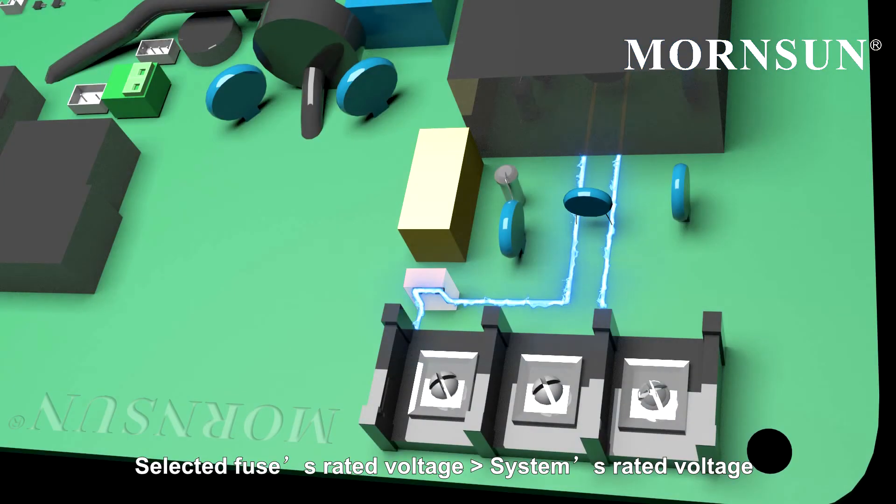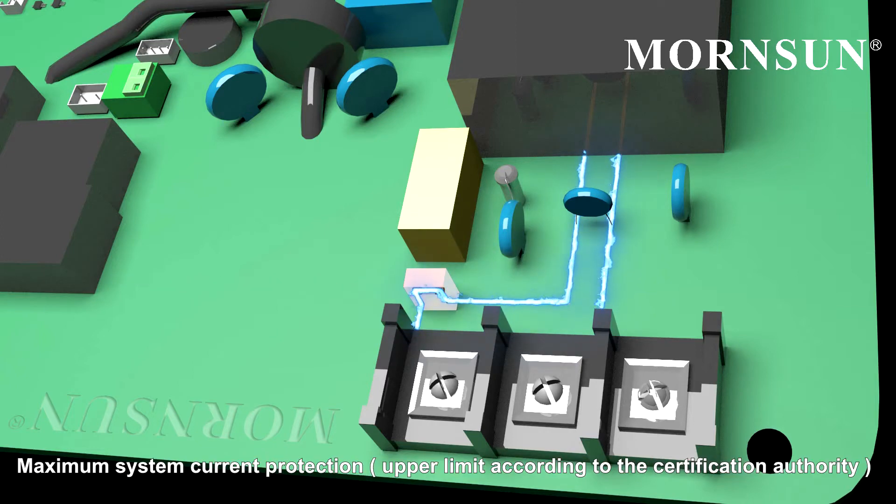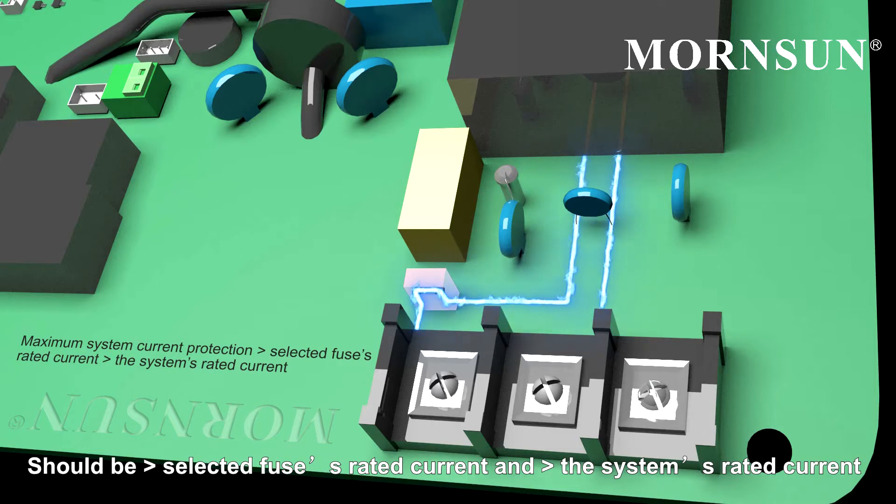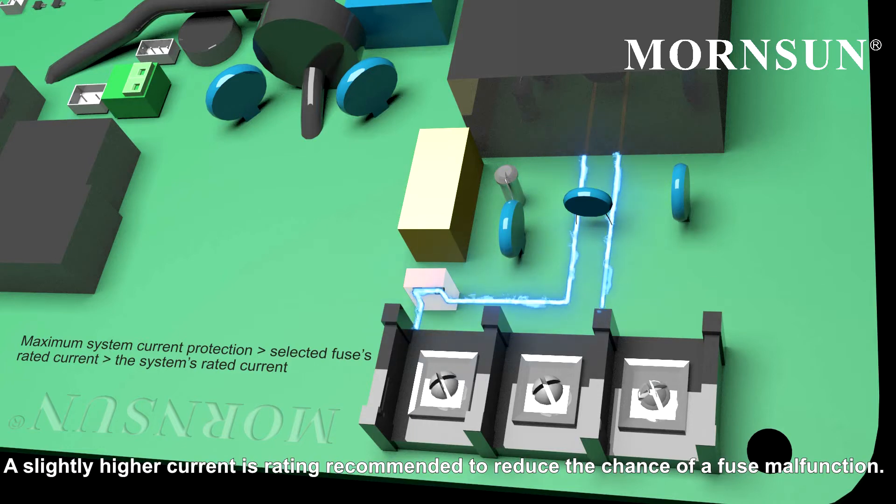Selected fuse's rated voltage should be higher than the system's rated voltage. Maximum system current protection, the upper limit according to the certification authority, should be greater than the selected fuse's rated current and greater than the system's rated current. A slightly higher current rating is recommended to reduce the chance of a fuse's malfunction.